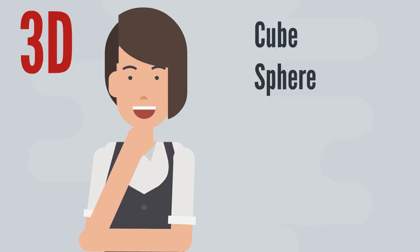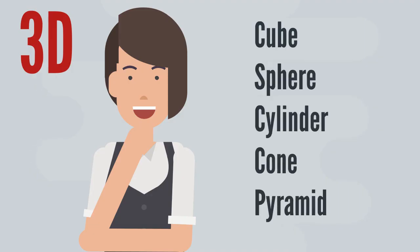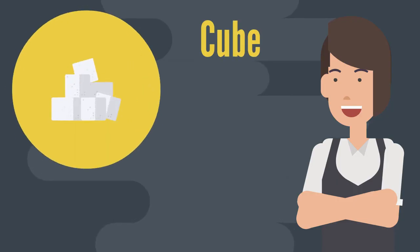Now let's jump into 3D objects. These are the ones we're covering today: cube, sphere, cylinder, cone, and pyramid. If we missed any, don't forget to put them in the comments below and we'll make sure to add them in another video.